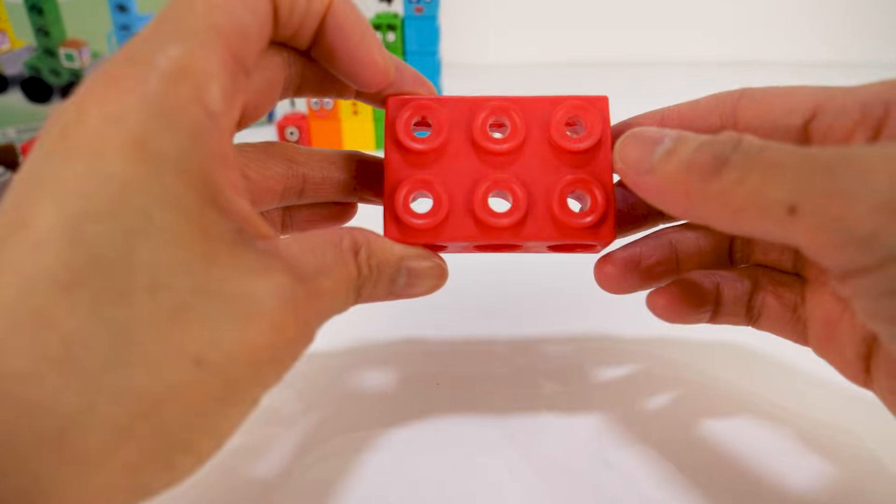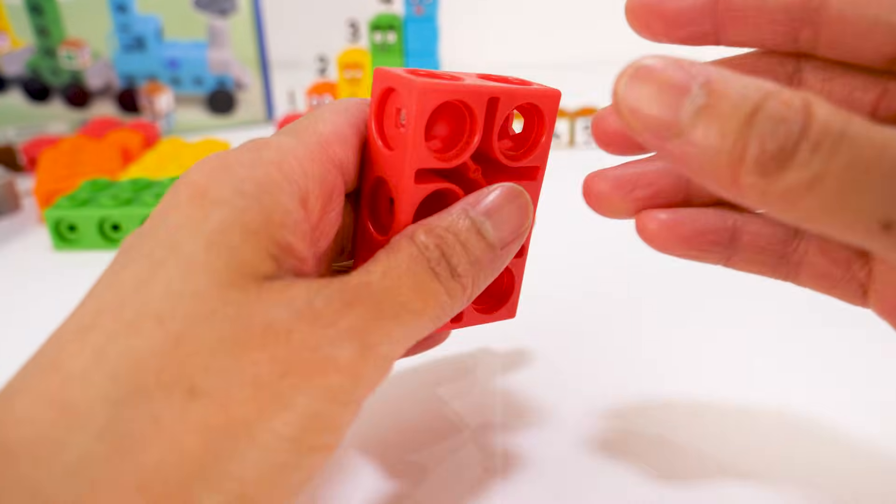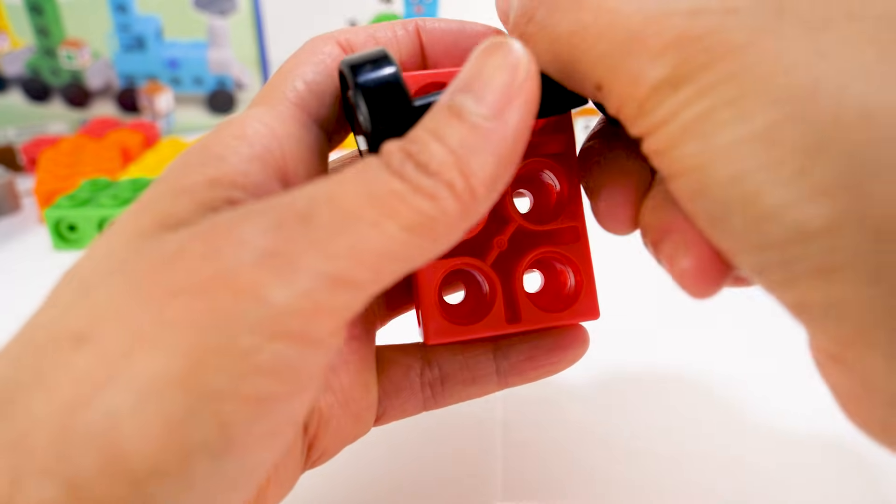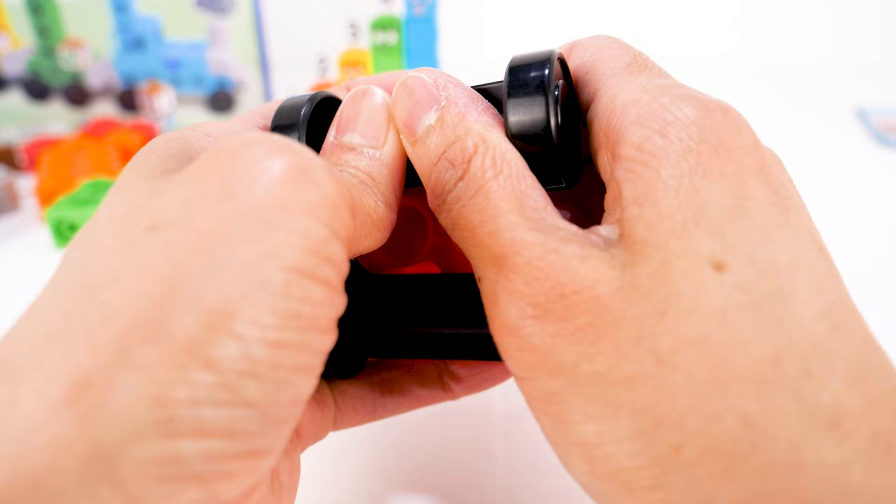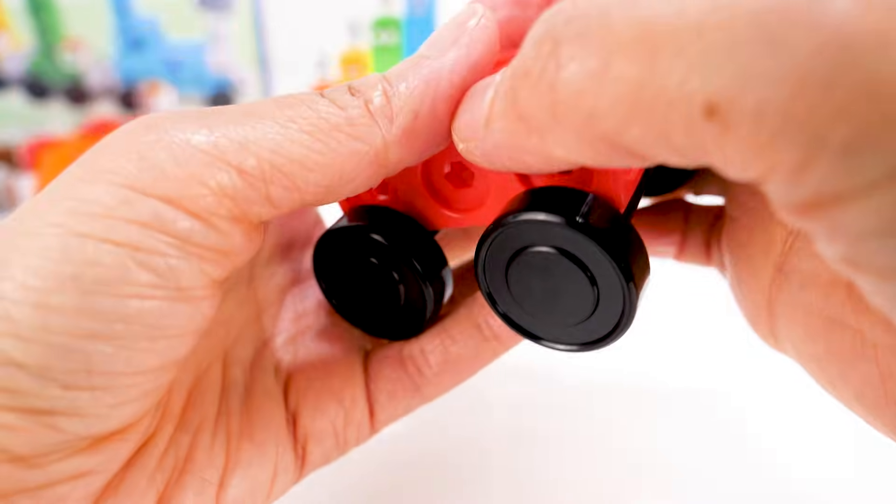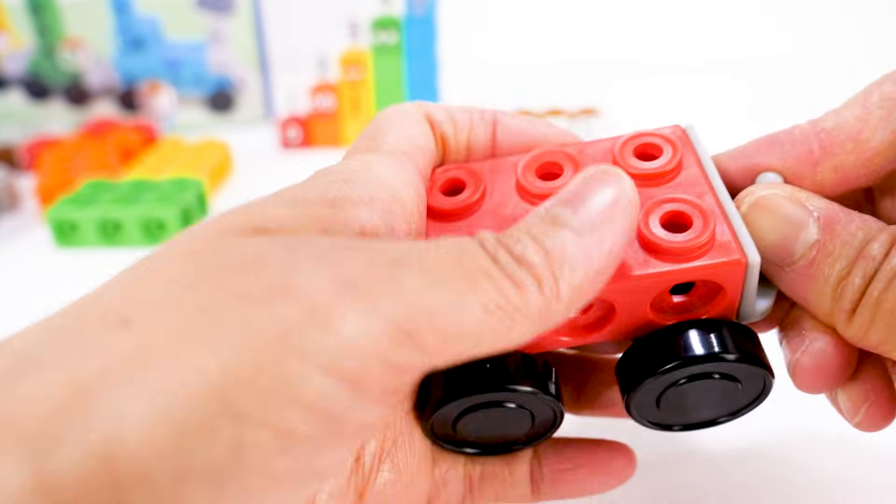It's time to build the train. Let's start with the red train base. First, we'll put on the wheels, then the front connector.